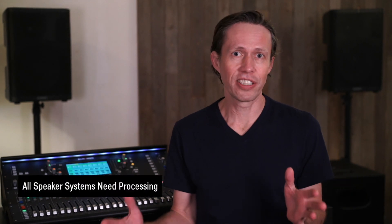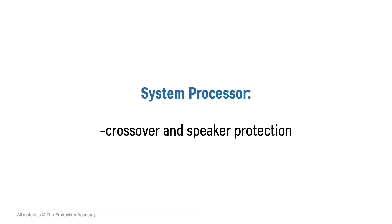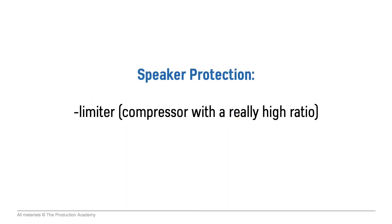Now all speaker systems need some processing — this can get a little complicated and we go into more detail in other courses. But we often control the speakers with a system processor which has two main functions: crossover and speaker protection. A crossover splits the signal into separate frequency bands like lows, mids, and highs, since all speakers are made to reproduce specific frequency ranges. This lets the right frequencies go to the right speakers.